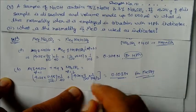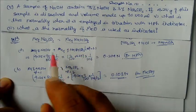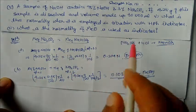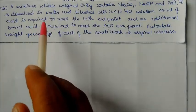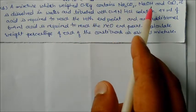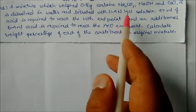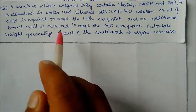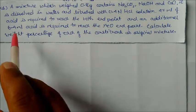With methyl orange, Na₂CO₃ is completely neutralized (n-factor = 2), whereas with phenolphthalein it is half-neutralized (n-factor = 1), and the volume is 500 ml. Next problem: a mixture weighing 0.8 grams contains sodium carbonate, sodium hydroxide, and calcium oxide. It is dissolved in water and titrated with 0.4 N HCl. 47 ml of acid is required to reach the phenolphthalein end point.